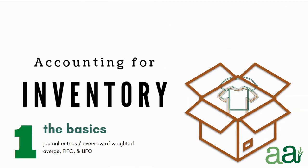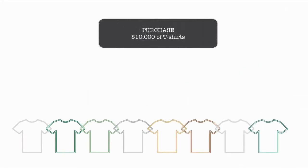So let's start off with really simple. A company decides that they're going to purchase t-shirts to sell to customers. The initial purchase of the t-shirts — in this example we're going to say $10,000 — is a debit to the asset account for inventory, and then there's a credit for the fact that you would pay cash or perhaps buy them on accounts payable for the $10,000.